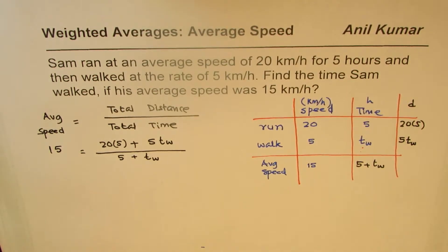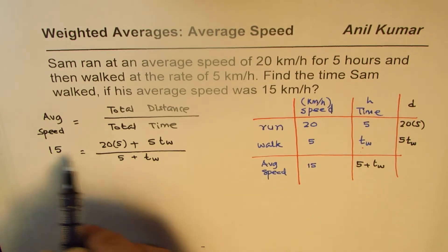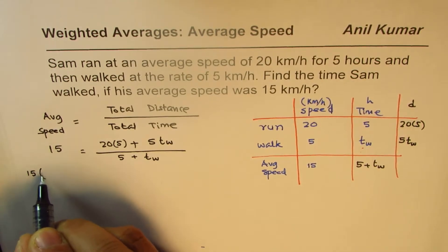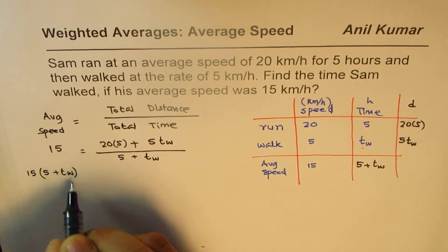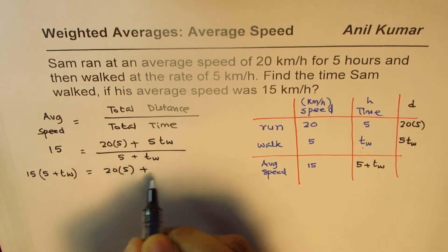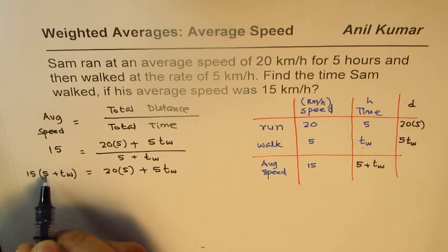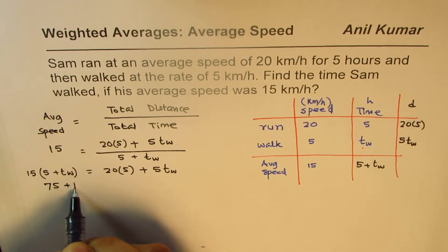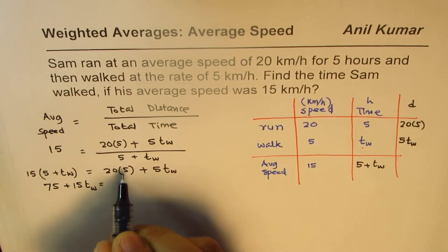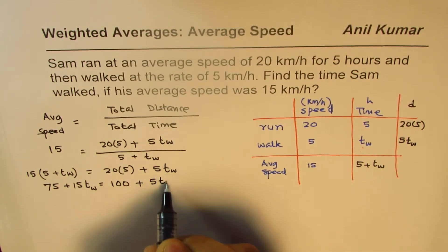Now we have to solve this equation to find the time which Sam took to walk. We cross-multiply and simplify: 15 times (5 plus T_walking) equals 20 times 5 plus 5 times T_walking. Opening the bracket gives 75 plus 15 times T_walking equals 100 plus 5 times T_walking.